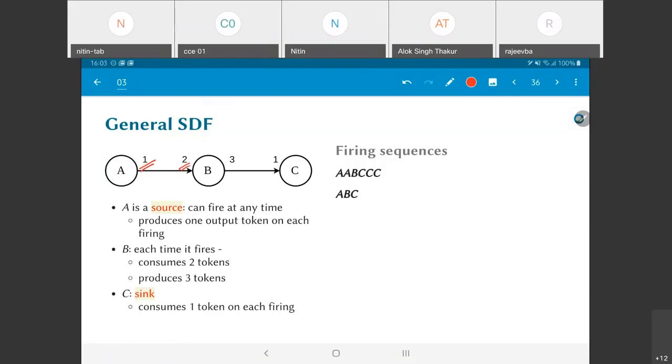The one indicates that every time A fires it produces one token which sits on the edge between A and B. The two on the incoming edge to B means in order for B to fire there have to be at least two tokens on the edge between A and B. Otherwise B is not yet ready, it doesn't have sufficient data.